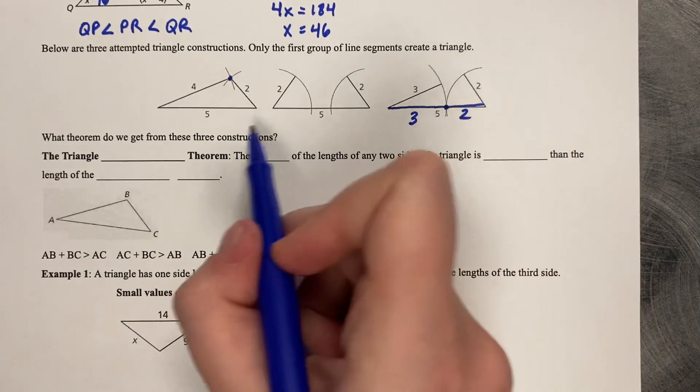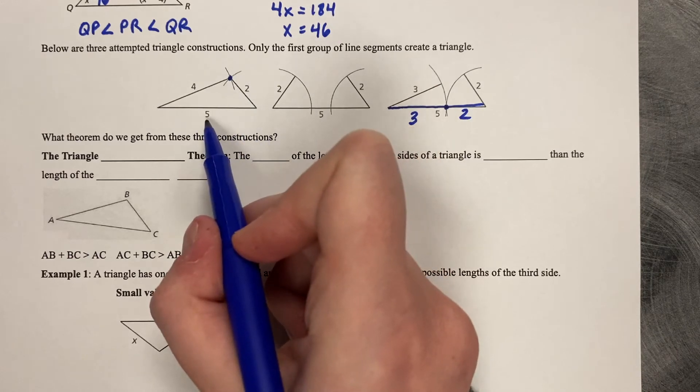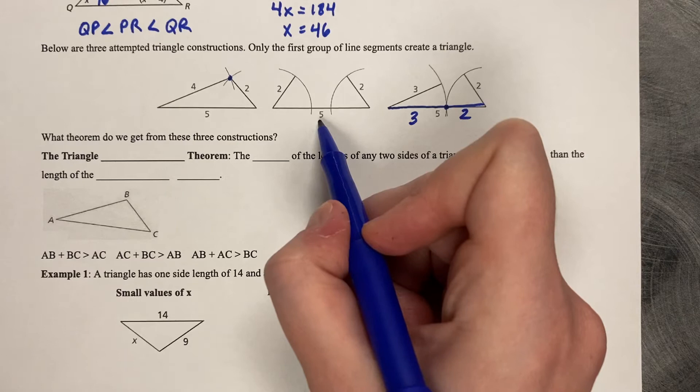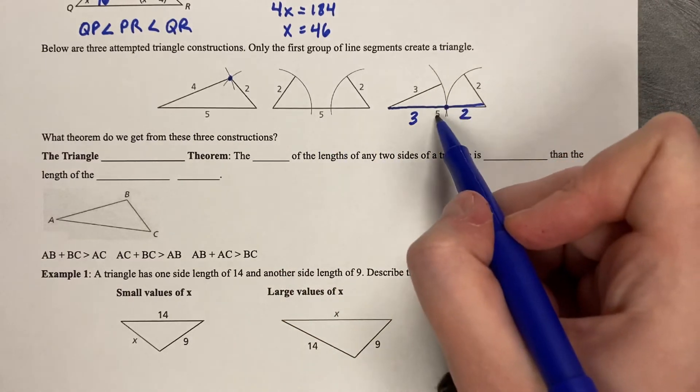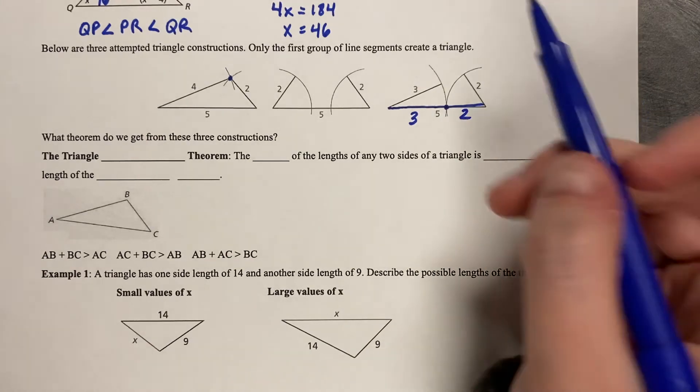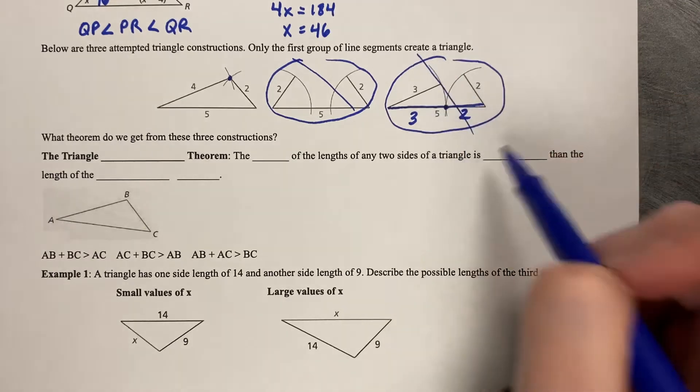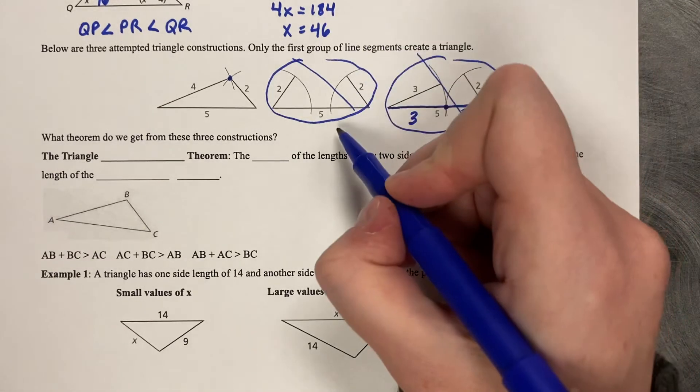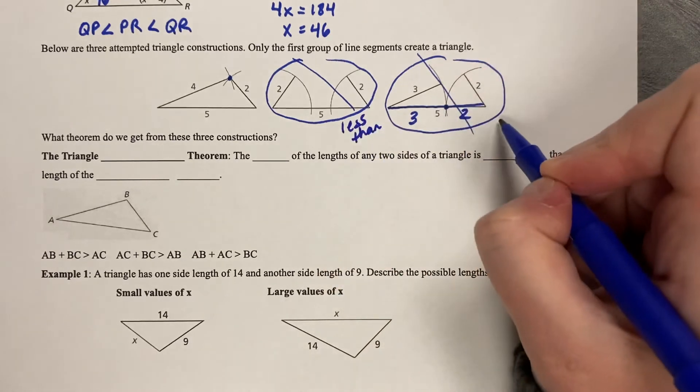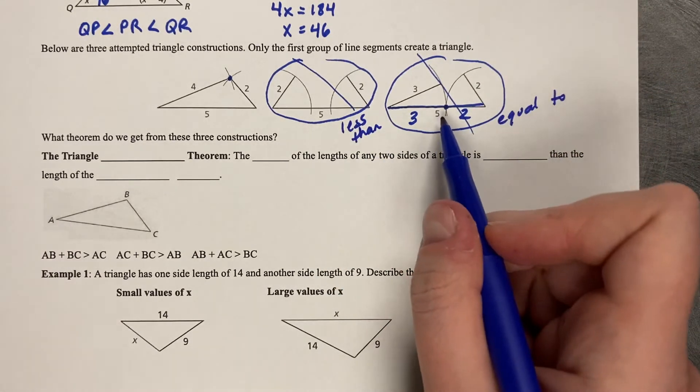So what does this have to do with each other? So let's take a look at the numbers. 4 plus 2 is 6. 2 plus 2 is 4. And 3 plus 2 is 5. So in comparison to 5, what do we notice? 4 plus 2 is 6. That's larger than 5. 2 plus 2 is 4. That's smaller than 5. And 3 plus 2 is 5. It equals 5. So which of these do not make a triangle? This one does not make a triangle. And this one does not make a triangle. So it cannot be less than or equal to the third side length.